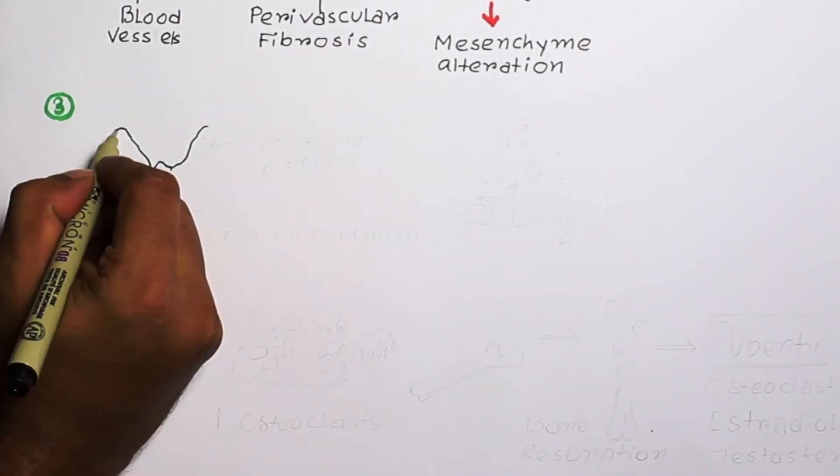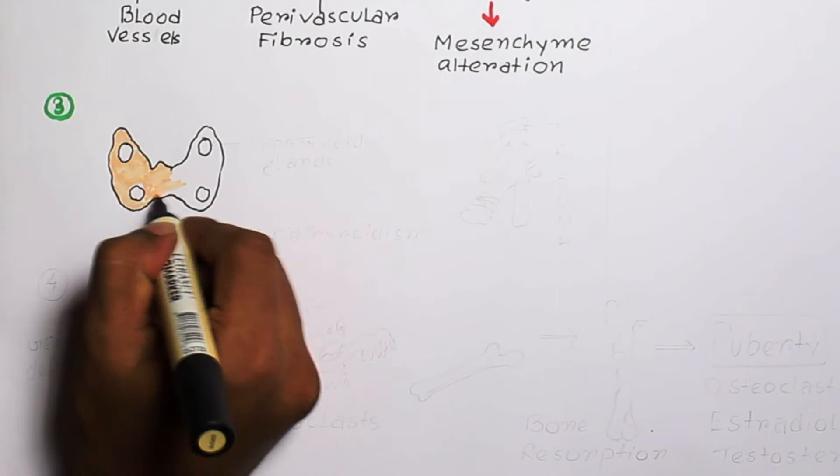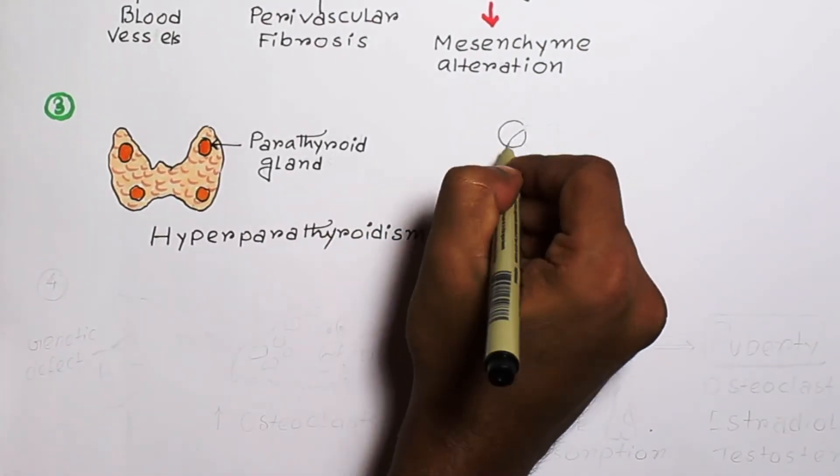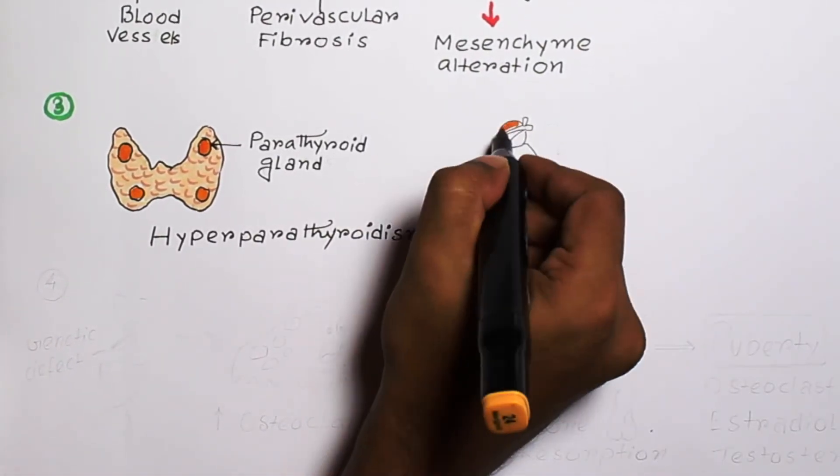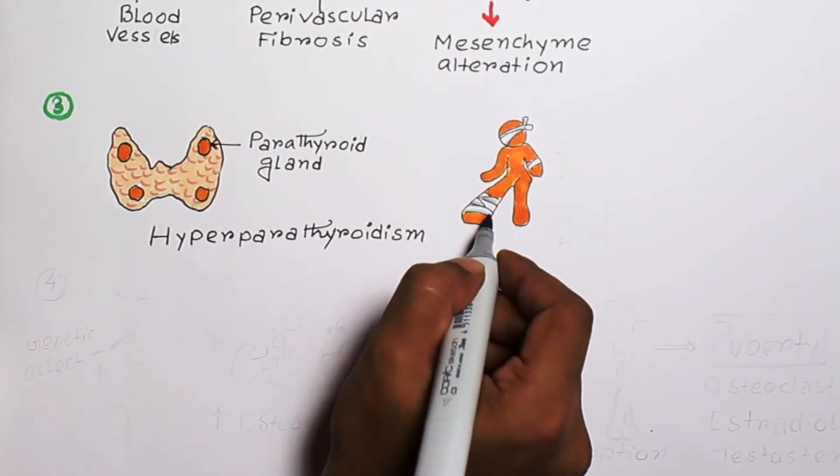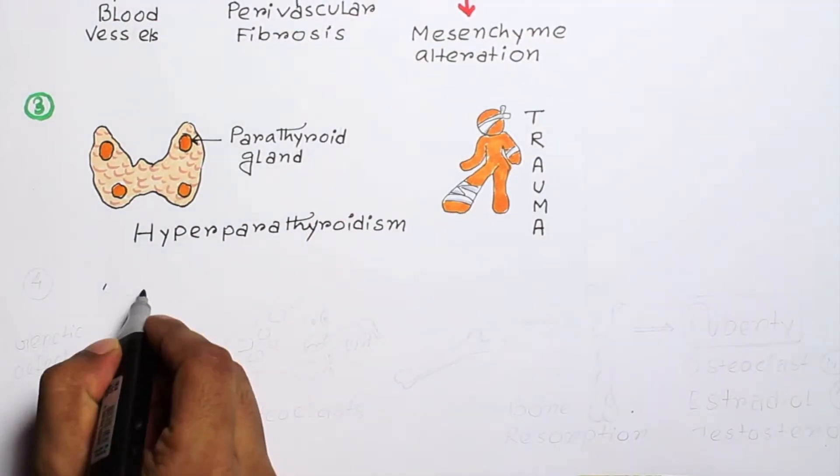Other causation theories include latent hyperparathyroidism and trauma, but most authors consider Cherubism to be a giant cell lesion in nature.